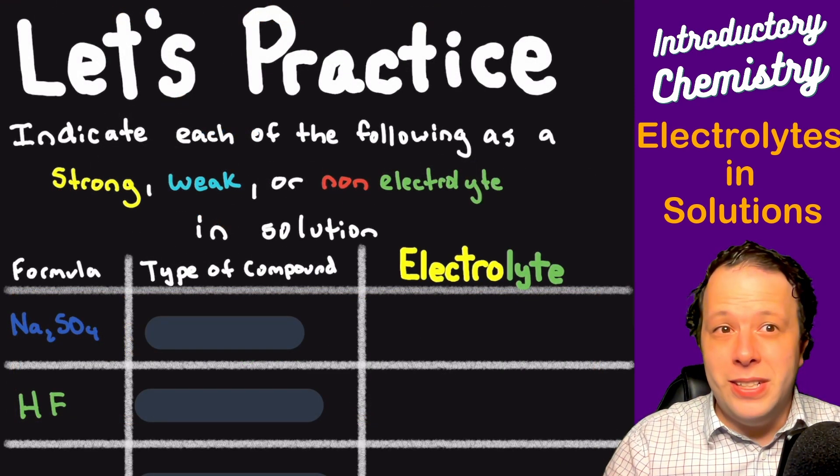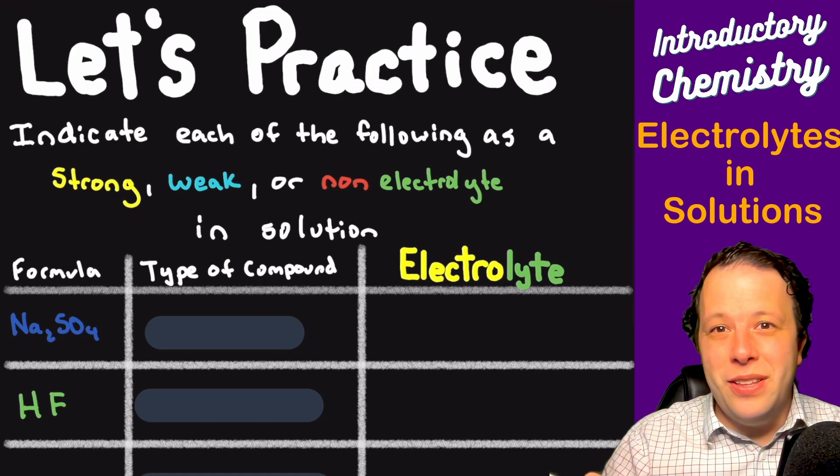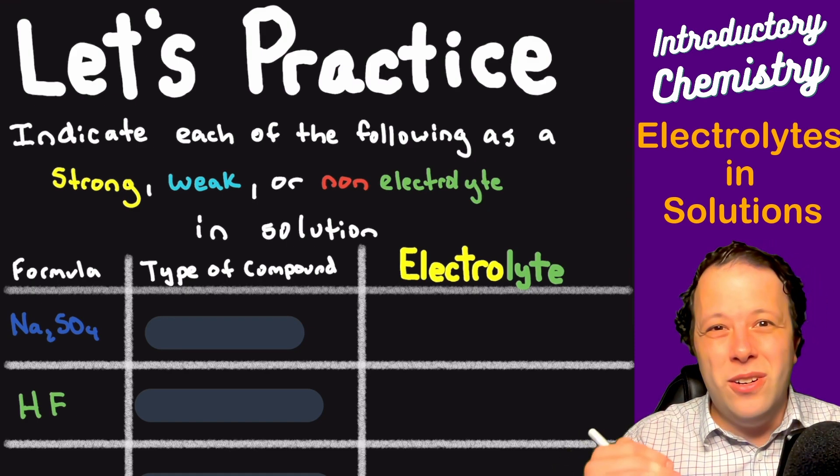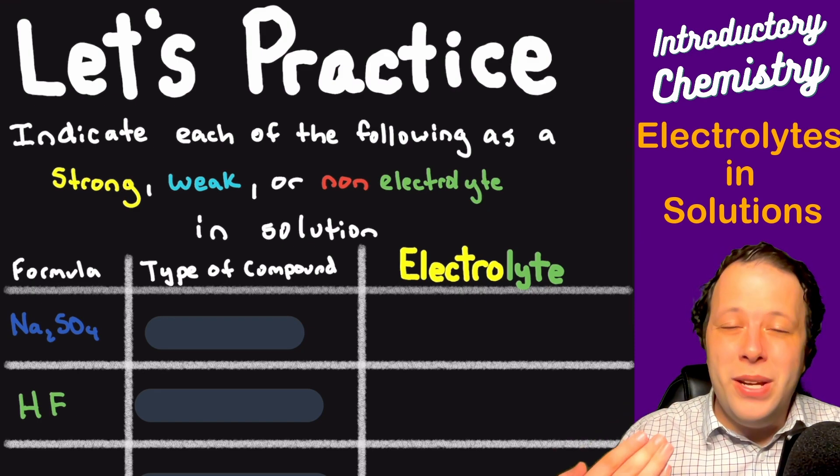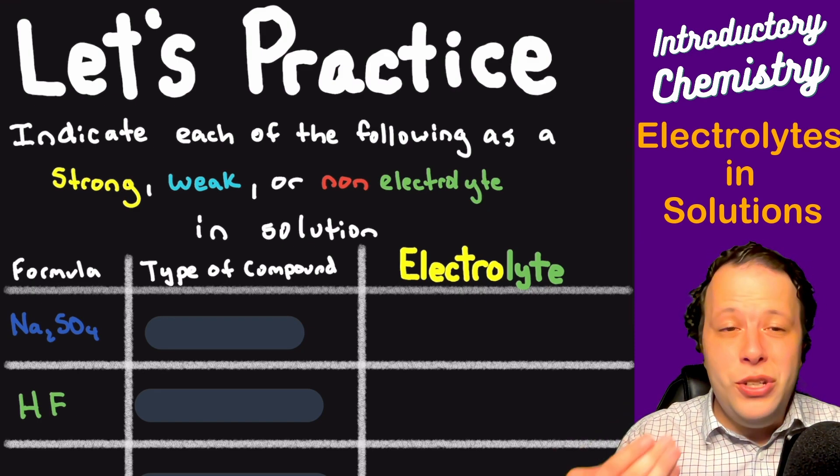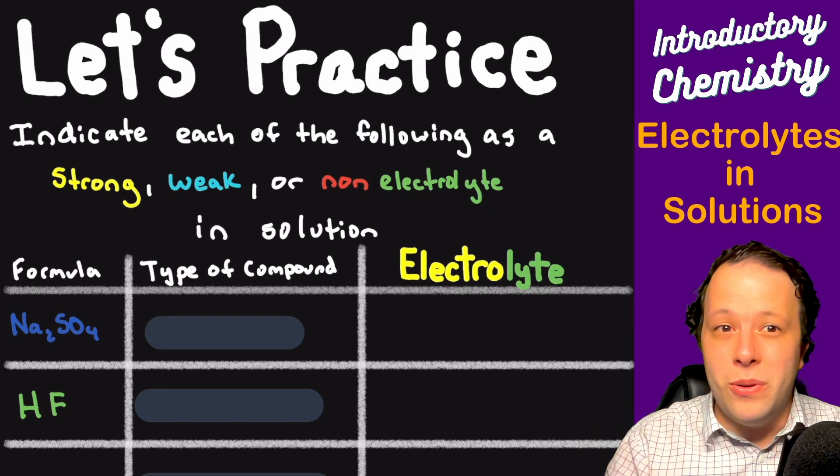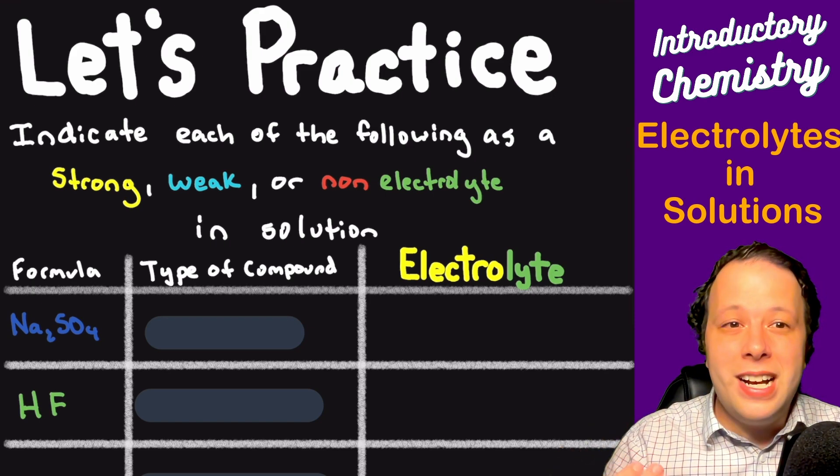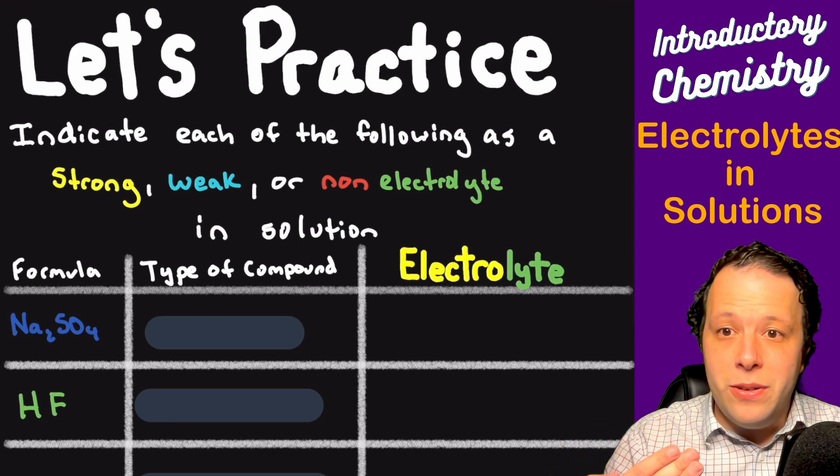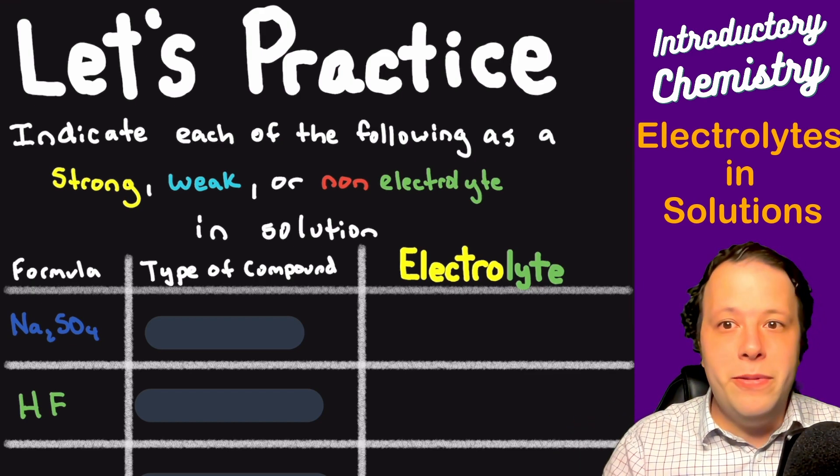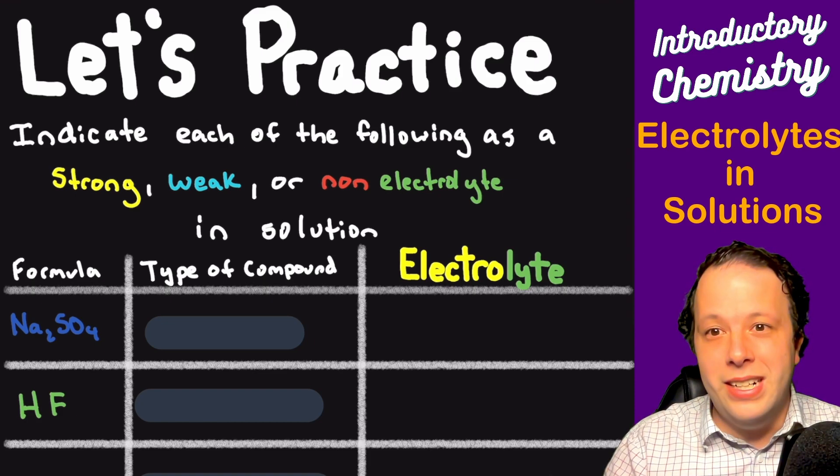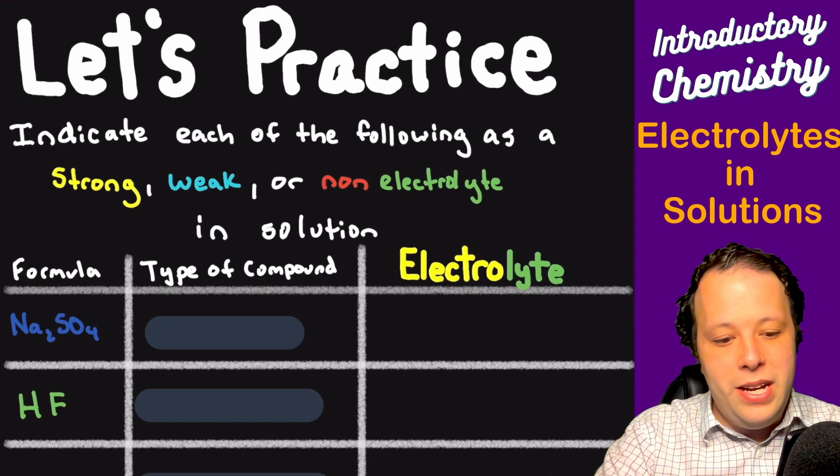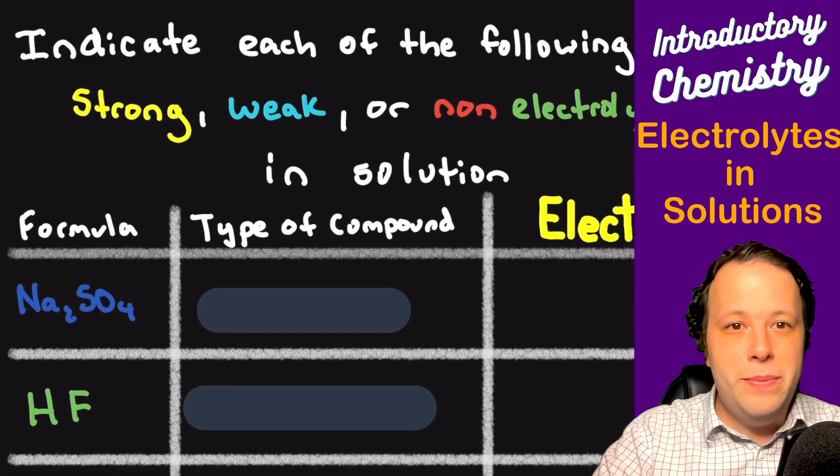Let's practice what we just learned. So indicate each of the following as strong, weak, or non-electrolytes in solution. So when we are trying to look at these different species, you will have to identify them in your course. So by doing that, what exactly are you going to do? So what we have to first try to figure out, what type of compound is it? So that way we can label what kind of electrolyte it's going to be.